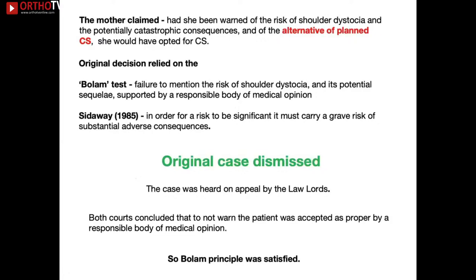The mother claimed that if warned of the risk of shoulder dystocia and its catastrophic consequences, she would have chosen a caesarean section. Lower courts applied the Bolam test and the Sidaway judgment — that a risk must carry a grave risk of substantial complications to be significant — and the original case was dismissed. However, the claimant appealed to the Supreme Court.